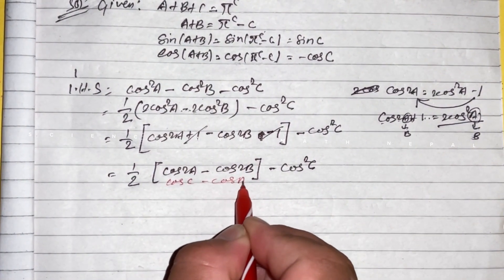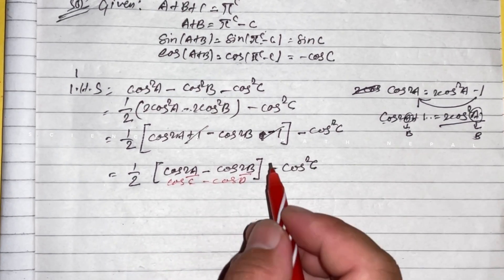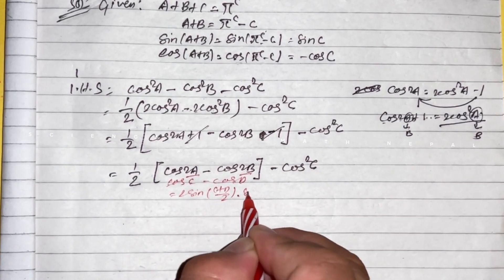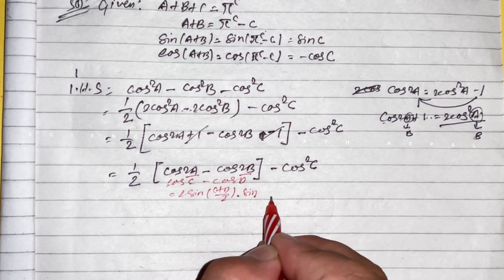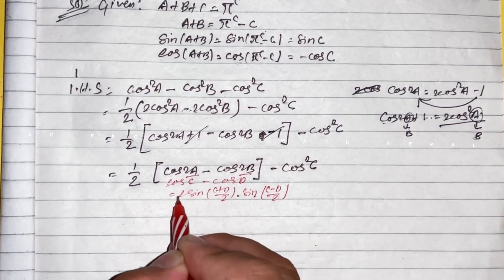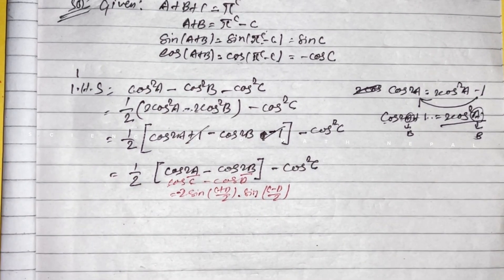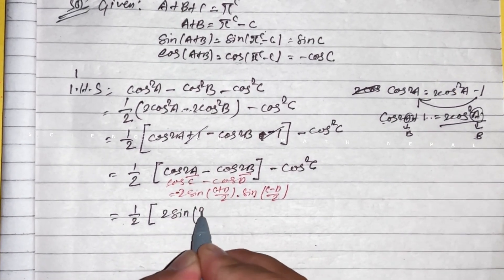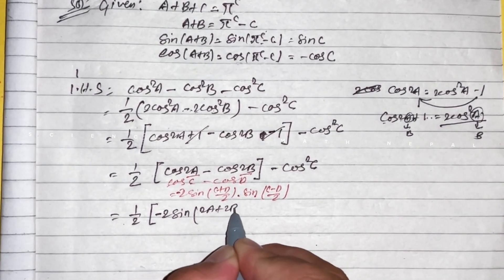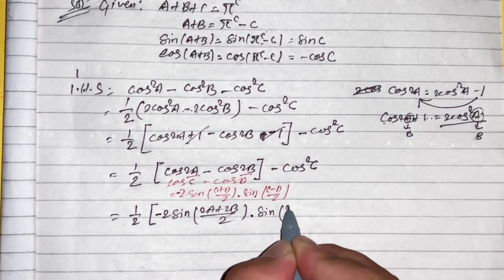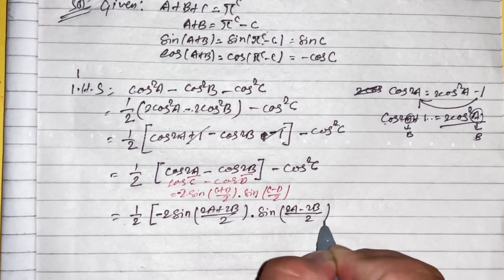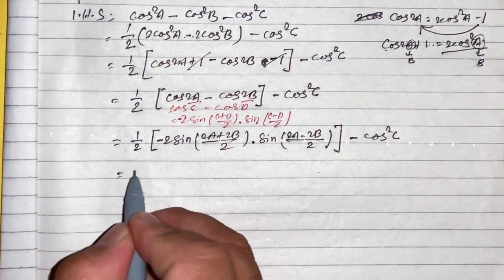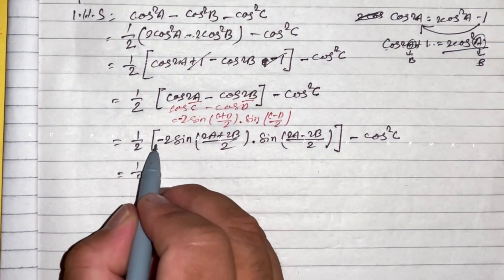Using the formula: cos C minus cos D equals 2 sin((C+D)/2) sin((D minus C)/2). This gives minus 2 sin(2a plus 2b divided by 2) into sin(2a minus 2b divided by 2), minus cos square c.